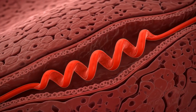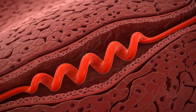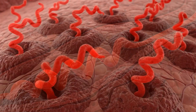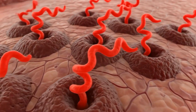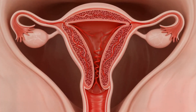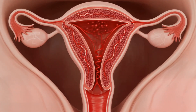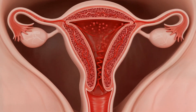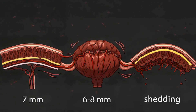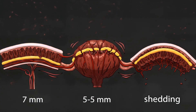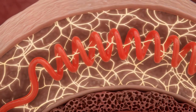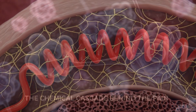The endometrium is fed by spiral arteries, unique blood vessels designed to support potential placental growth. When pregnancy doesn't occur, they become part of the shedding process. This intricate design, while essential for reproduction, also sets the stage for the discomfort many experience during menstruation.